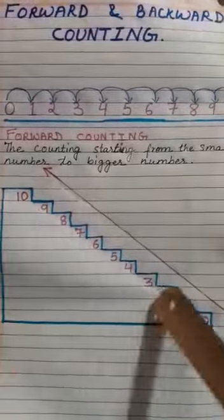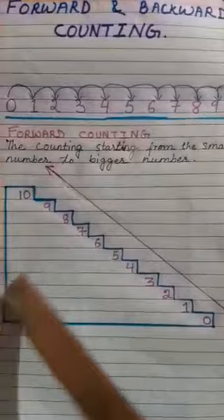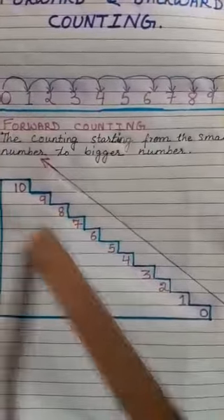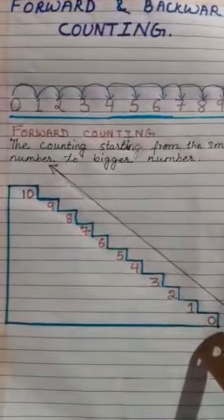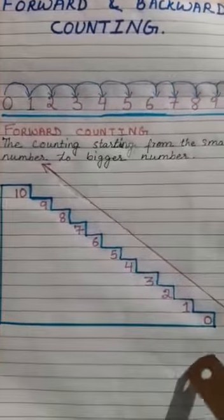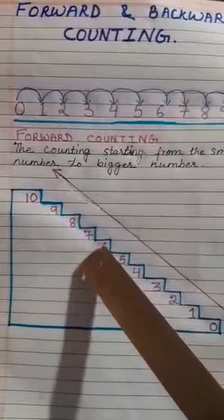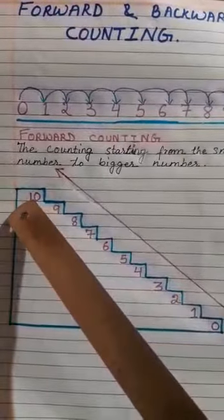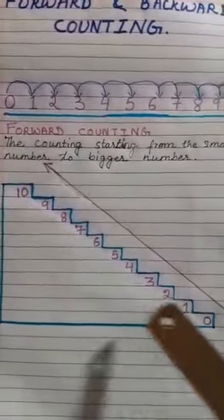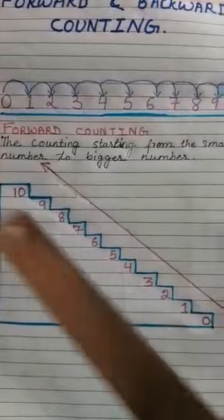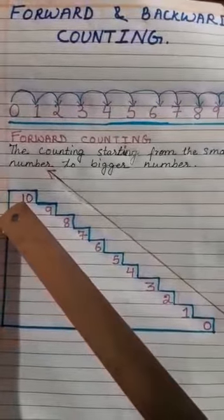Now see I have drawn some stairs. So, forward counting means from 0 to 10. Like it goes up 0, 1, 2, 3, 4, 5, 6, 7, 8, 9, 10. So from small number to big number, it's called forward counting.